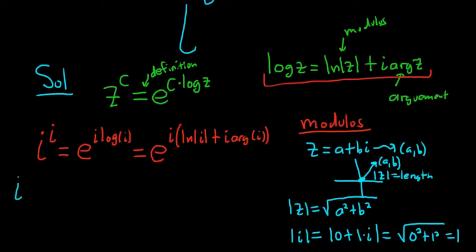Let's go back to our problem. So i to the i is equal to e to the i natural log of 1. The natural log of 1 is 0. So this piece here is going to be 0 plus i arg i. So we just have to figure out what arg i is.